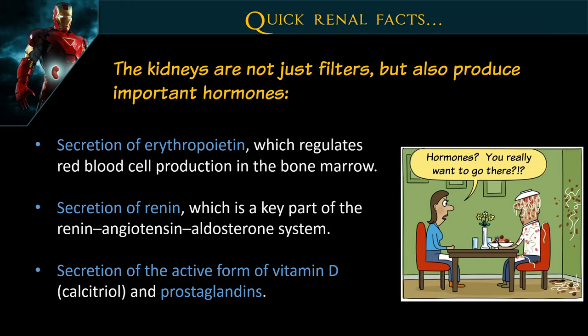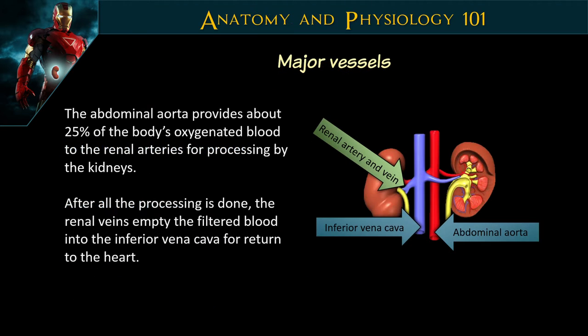Not only are the kidneys filters, but they also release hormones. They secrete erythropoietin (EPO) — which is why our renal patients are often anemic, because this hormone regulates red blood cells driven by the bone marrow. The kidneys also secrete renin, activate vitamin D, and produce prostaglandins. So they're not only filtering systems but also producers of certain substances. Remember, the adrenal glands sit on top of the kidneys and can eventually be affected as well.